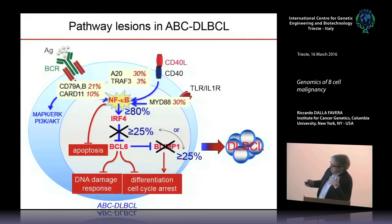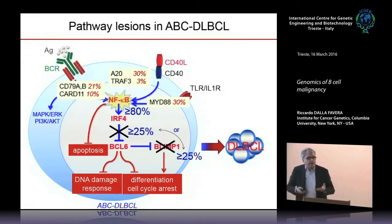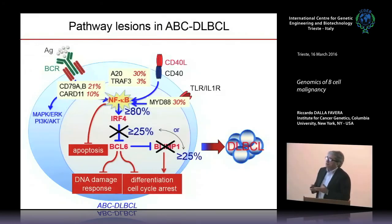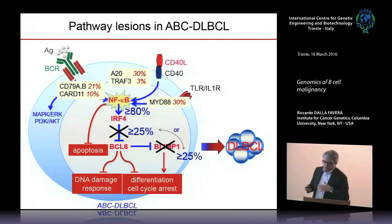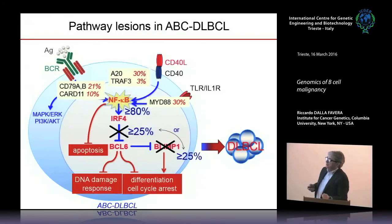We modeled each one of these alterations in mice and combined them, each producing the predicted effect. The conclusion is that we can reproduce diffuse large B cell lymphoma by combining these alterations and generating the phenotype, though mice require additional alterations to fully select the tumors. These are certainly important genetic alterations.